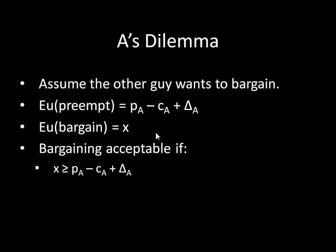In contrast, if both sit down at the bargaining table, A receives X. So bargaining is acceptable to A if X is greater than or equal to PA plus delta A minus CA. A is willing to sit down at the bargaining table as long as that condition holds.